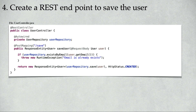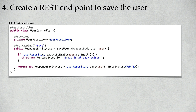The last step is to create a REST endpoint to save the user details. We'll create a UserController, auto-wire the UserRepository, and create a REST endpoint using @PostMapping with the URI /save. Inside an if condition, we'll call the repository method existsByEmail, passing the user's email. If it returns true, we throw a RuntimeException with the message 'Email is already exist'. Otherwise, we save the details to the database.